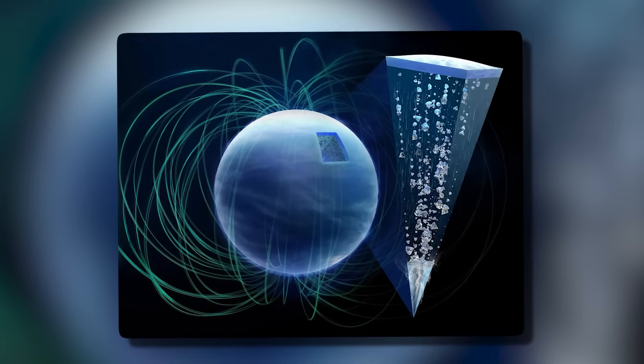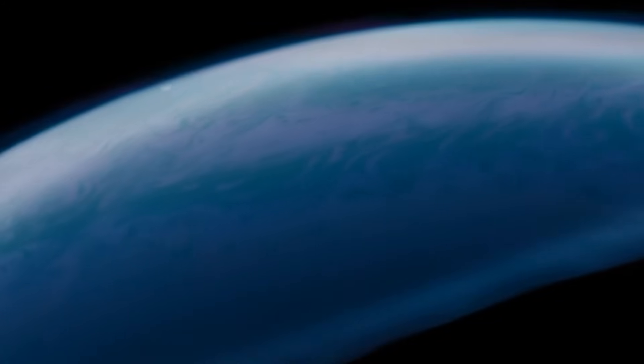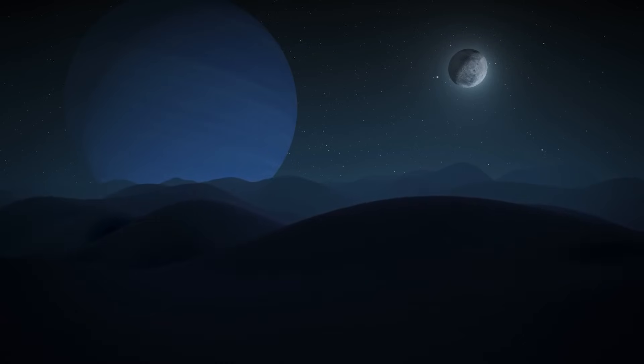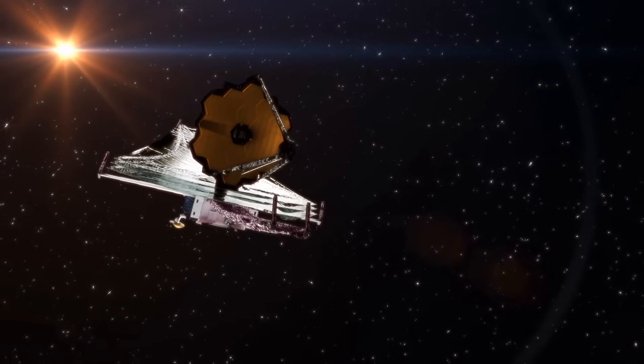These changes hint at deeper processes within the planet that remain largely invisible but profoundly influential. If Neptune's magnetic field can shift so rapidly, what does that say about the stability of its core or the interactions between its inner layers? Then came the question of Neptune's moons, particularly Triton, which Webb also observed in stunning detail.